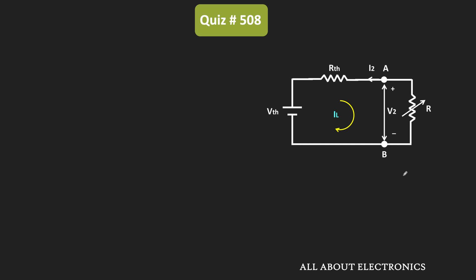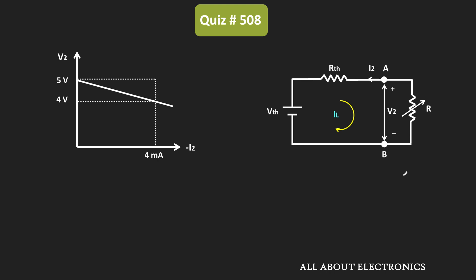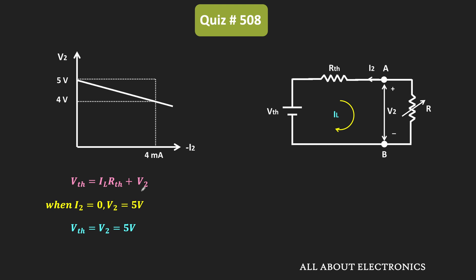We have been given that as the value of variable R changes, V2 and I2 change accordingly — shown in the plot of V2 versus minus I2. With this, we can find Vth and Rth. Applying KVL to the simplified circuit: Vth = IL × Rth + V2, where V2 is the voltage across variable resistor R. From the plot, when I2 = 0, V2 = 5V. Since I2 = 0, IL = 0 as well, meaning R acts as an open circuit. Substituting these values, V2 = Vth = 5V.